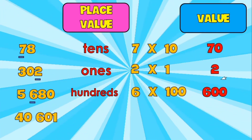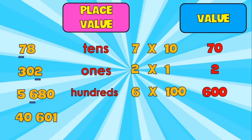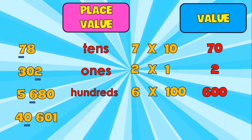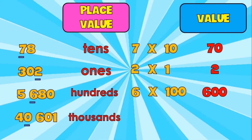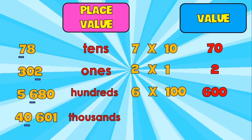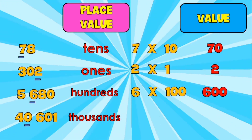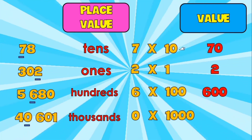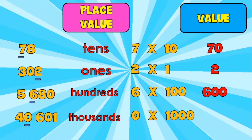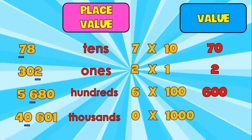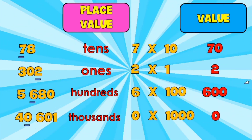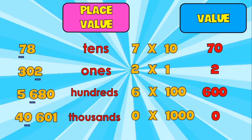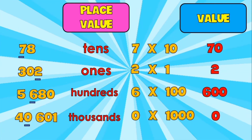Last number: 40,601. I have zero. What is the place value of zero? It's thousands. And how do we get the value of zero? Let's get zero times 1,000 since it's in thousands place. Zero times 1,000 is zero, because any number multiplied by zero is zero. That's how you get the value of a digit.